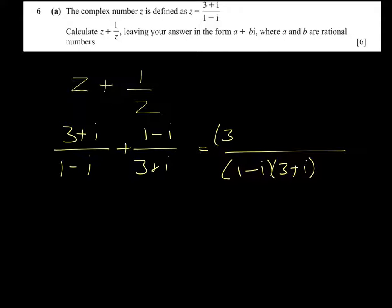The first numerator will be 3 plus i all squared, and our second numerator 1 minus i all squared. 3 plus i all squared: square the first term, twice the product, square the last. Square the first term, twice the product, and square the last.